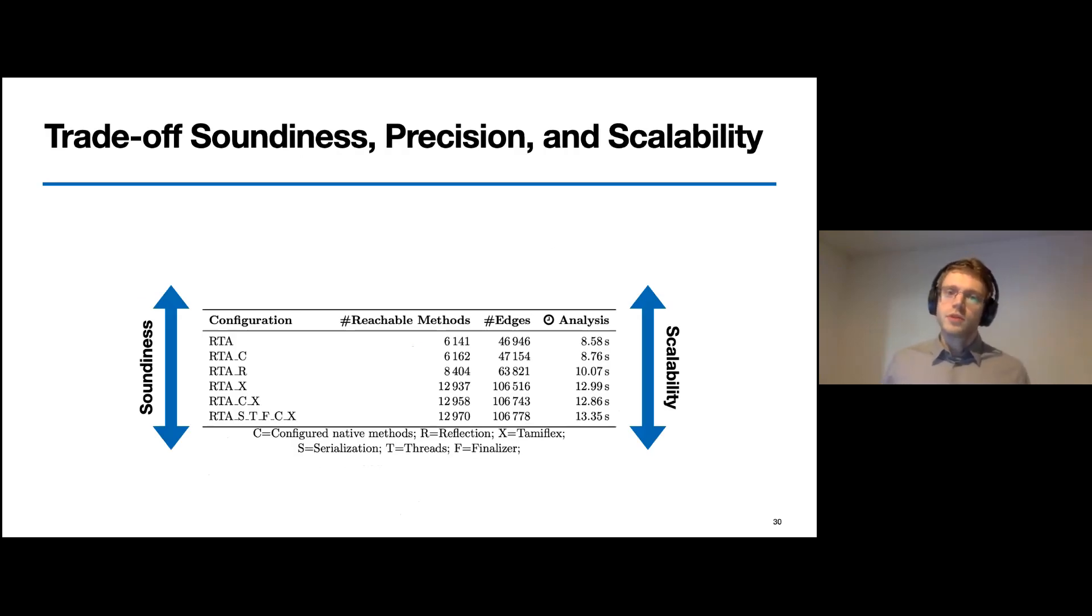Using this system, we constructed several call graphs successively and added analyses for different language features and APIs. And what we see here is that we can simply add and remove feature analyses to trade off the call graph soundiness and scalability. But we can also exchange single analysis implementations to replace a sound but imprecise analysis with a soundy and precise one.